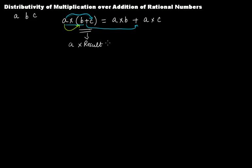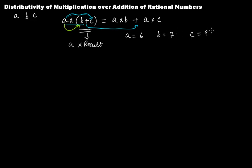It's not only true for rational numbers — it's actually true for integers and whole numbers as well. We have already discussed this when learning about whole numbers and integers. To show you for whole numbers, let's say a is equal to 6, b is equal to 7, and c is equal to 9.